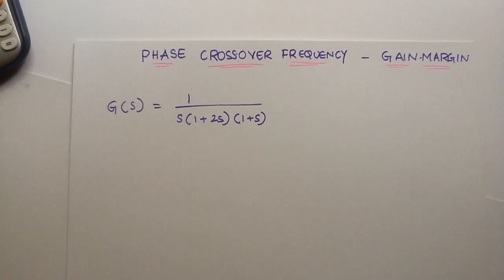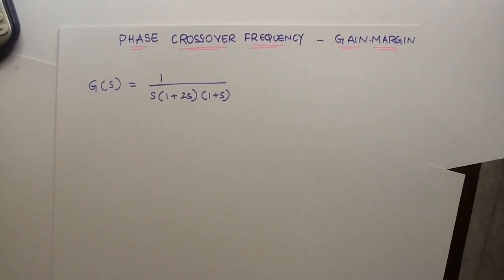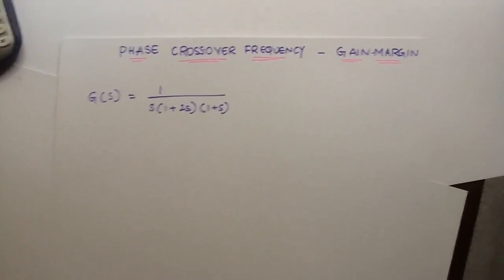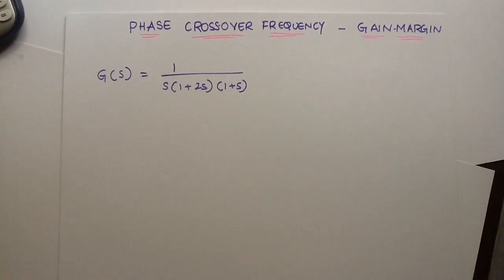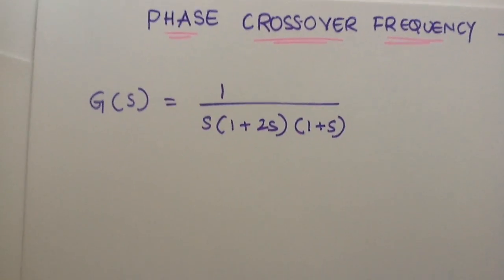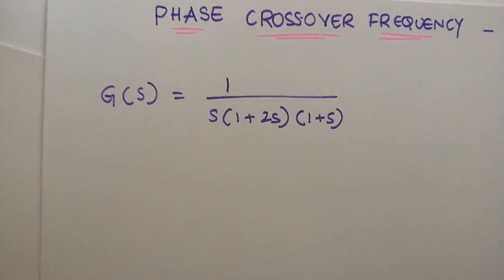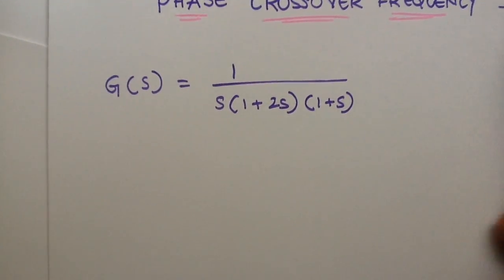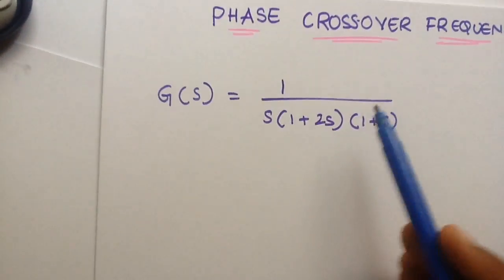So by using a simple formula, you can find out the phase crossover frequency, the gain margin, the gain crossover frequency, and the phase margin. So in this video, we'll be doing just that. So first, I have a transfer function G is equal to 1 by s into (1 plus 2s) into (1 plus s).